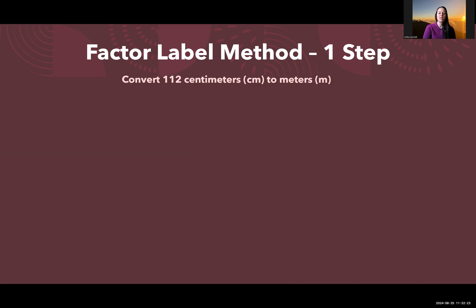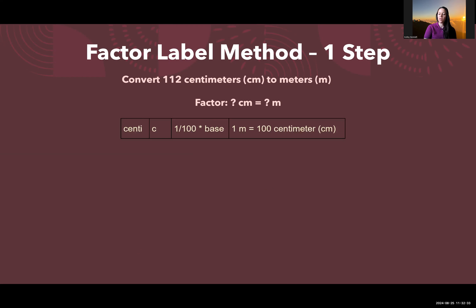Let's try this again. Convert 112 centimeters to meters. We'd like to know how many centimeters is equivalent to meters. From the conversion table, centi (c) means that 1 meter is equal to 100 centimeters, so the factor we're going to use is 1 meter equals 100 centimeters.